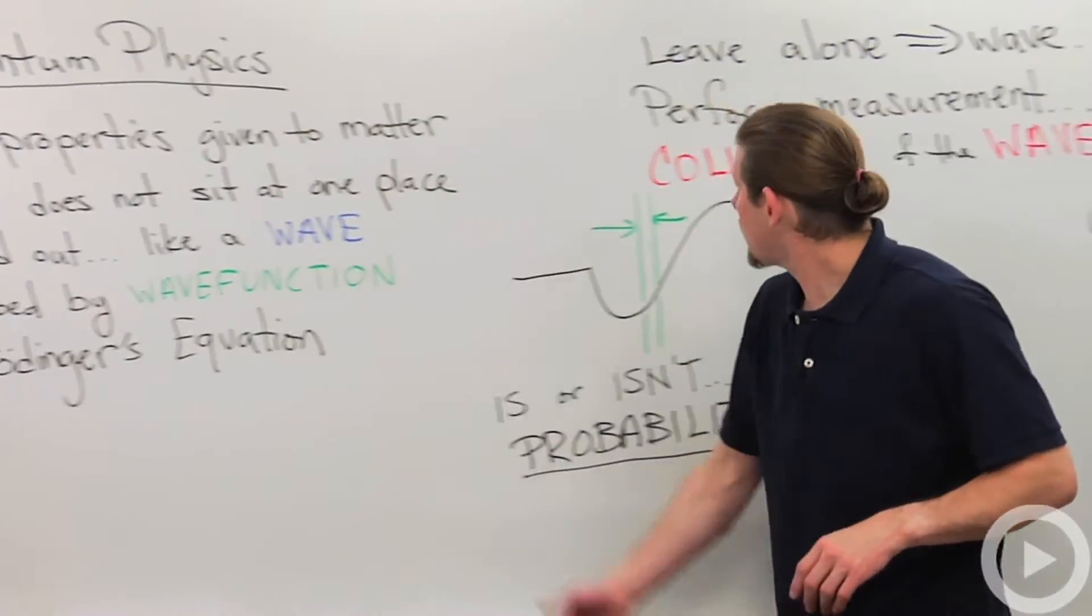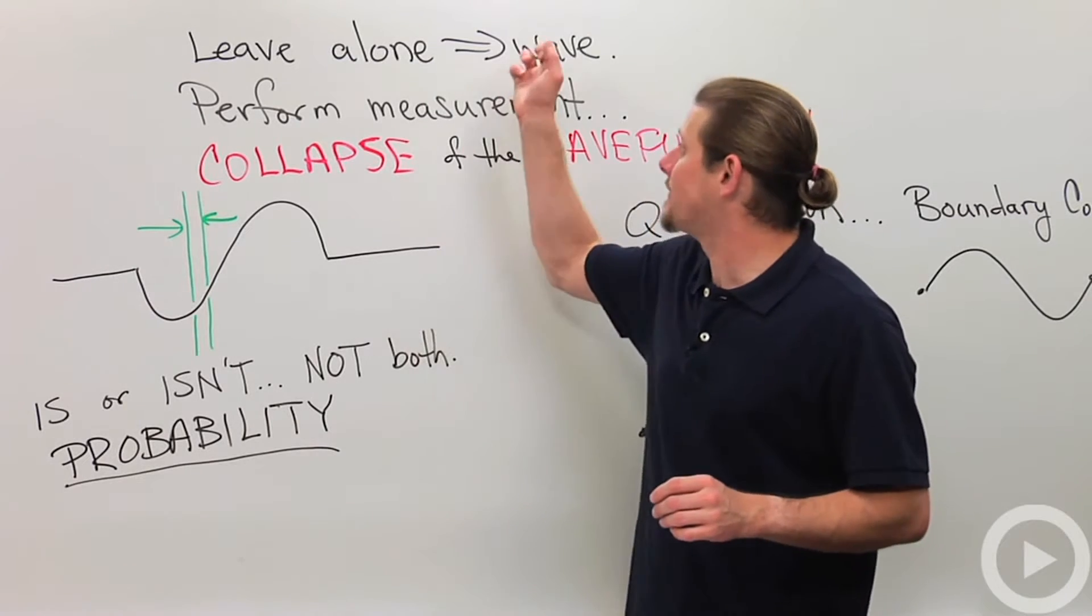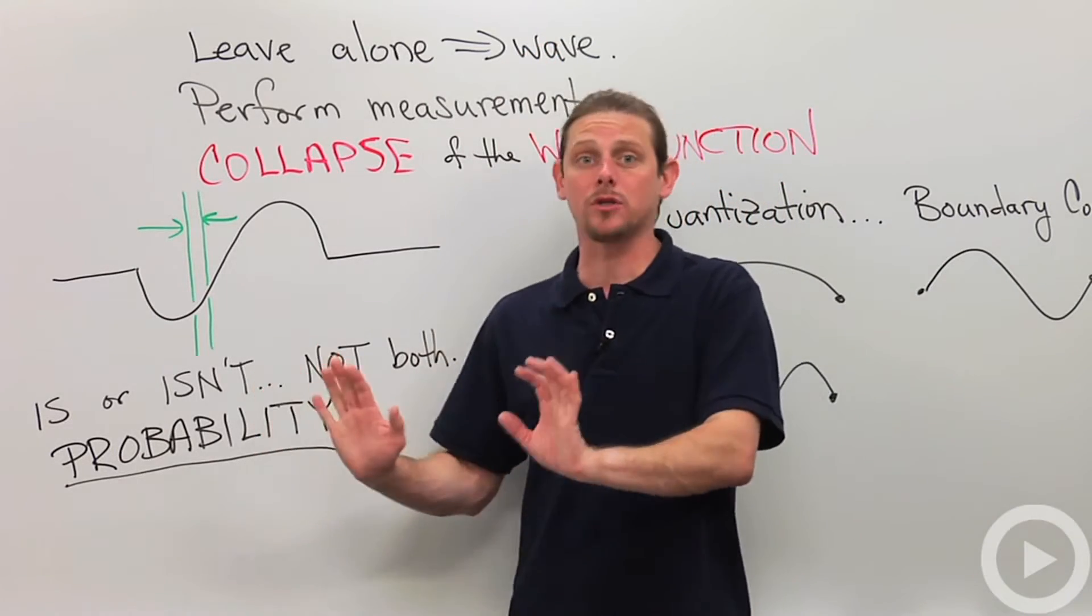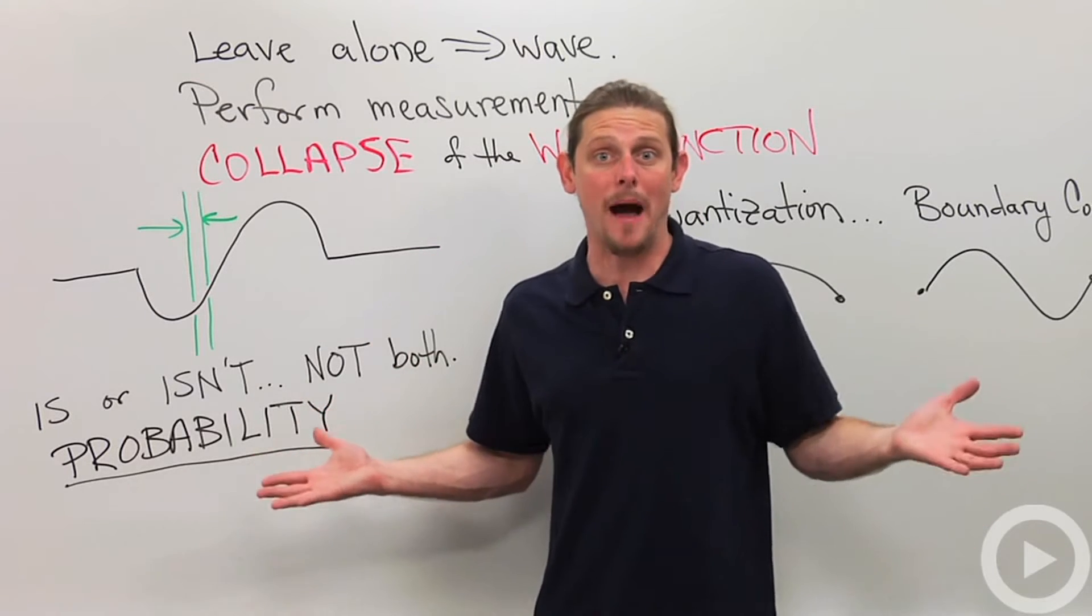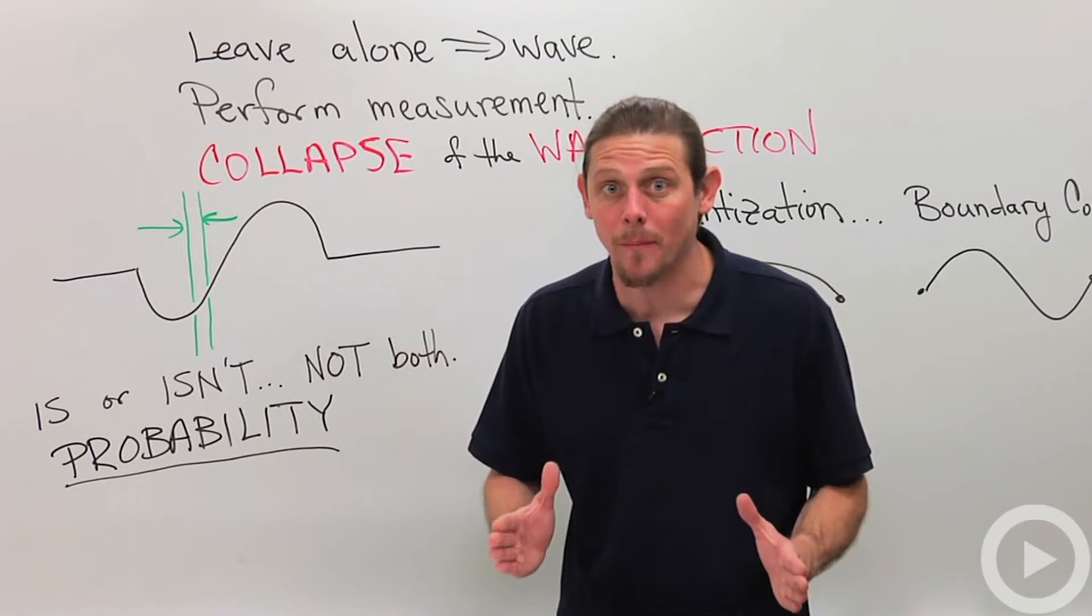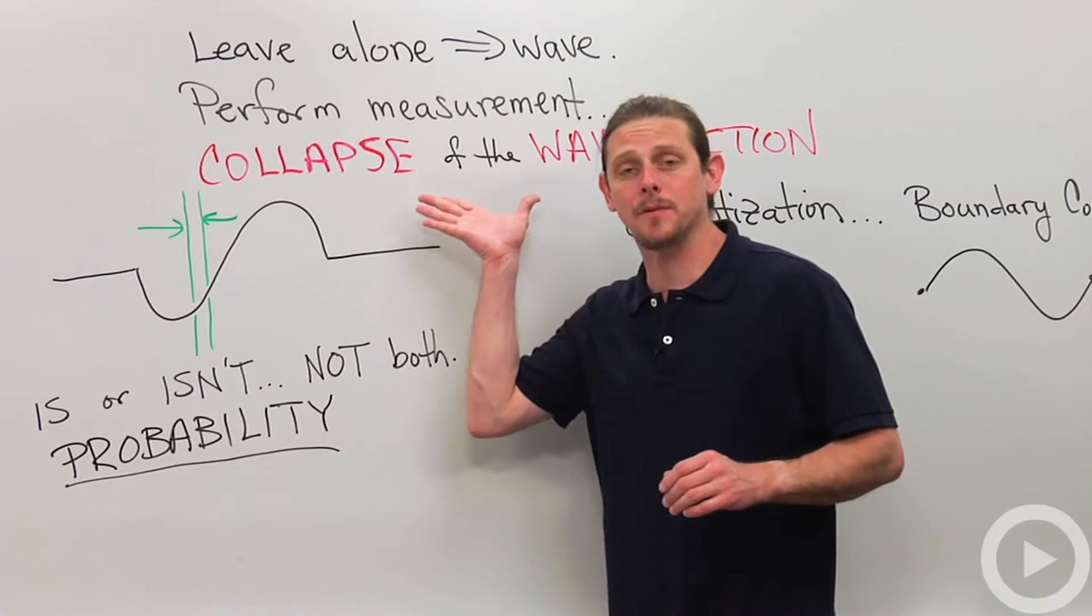All right, so if we leave the particle alone, it behaves like a wave. So we're just sitting there, letting the system do whatever it wants to do, and it's described by its wave function. However, if we perform a measurement, suddenly we get something called the collapse of the wave function.